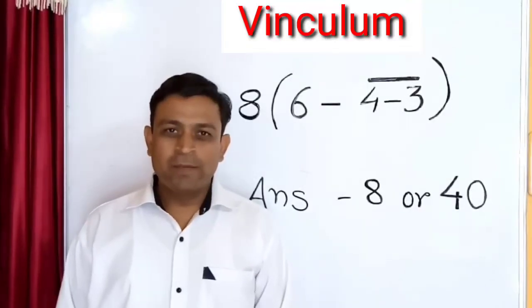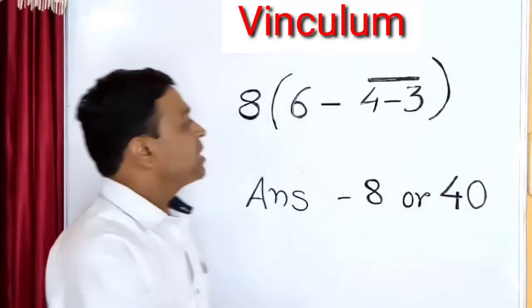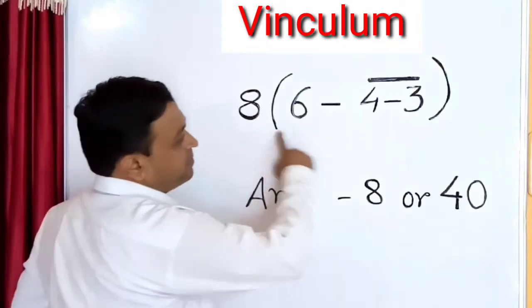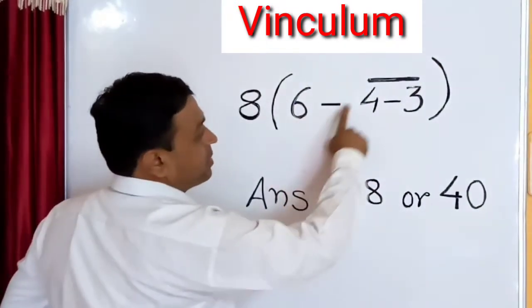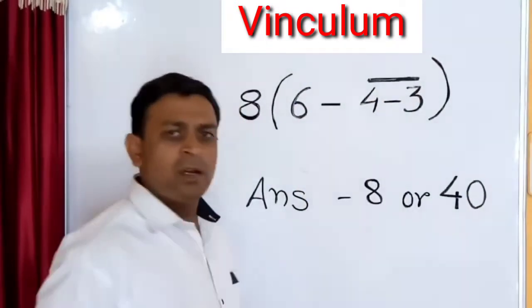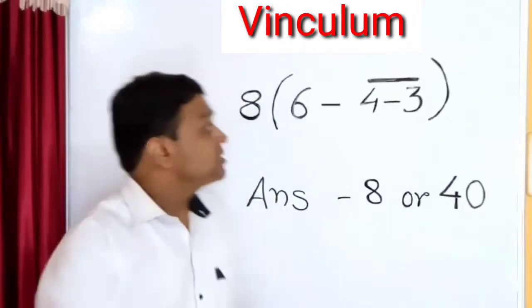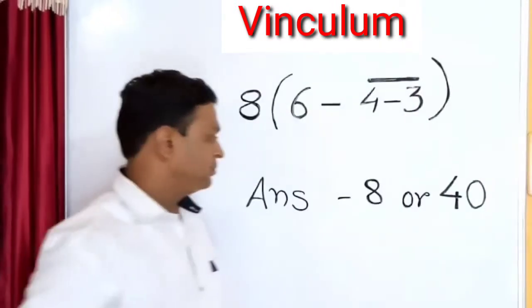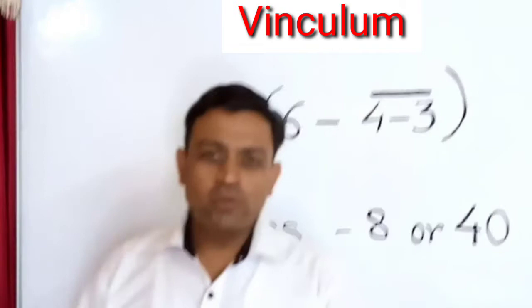Hey friends, when you study mathematics, you may face this type of problem: 8 in parentheses, 6 minus 4 minus 3. And look carefully, there is a bar on 4 minus 3, that is called as vinculum.